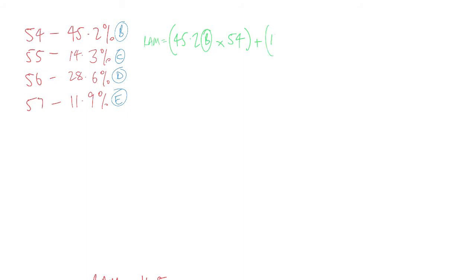And so we want the sum of all of these percentages times the relative atomic mass. So then we do the next one: 14.3, which is saved as C on our calculators, times 55, plus 28.6 times 56, plus bracket 11.9 times 57. Now it is really important to use brackets appropriately when doing this calculation, otherwise you are going to screw it up. So make sure you know how to use your brackets and make sure you put every single one in. And remember, the sum of these isotope abundances is going to be 100.